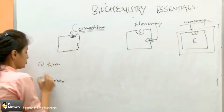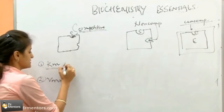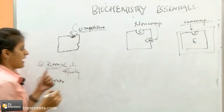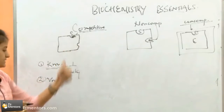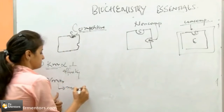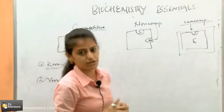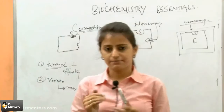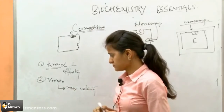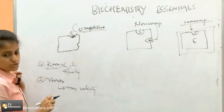So that is uncompetitive inhibition. Now coming to Km and Vmax — what do they indicate? Km is inversely proportional to the affinity between substrate and enzyme. And Vmax, as the name says, is the maximum velocity of the reaction, which can be reached after the substrate binds to the enzyme.